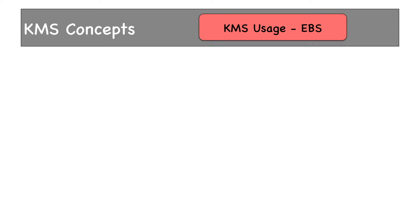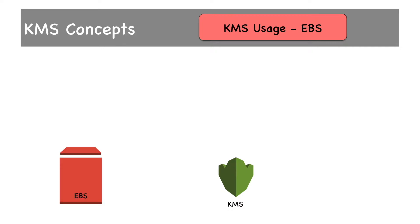How other AWS services use KMS. Let's start with EBS. We have our KMS here. In the demo, we created an EBS volume and provided the CMK. When you create an EBS volume and specify that you want to encrypt it, EBS sends a request to KMS specifying the CMK which we had chosen — we created the key AWS Foundation KMS key for EBS volume encryption.